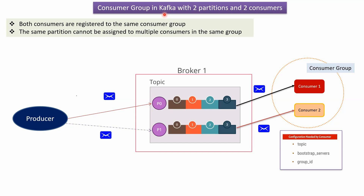In this video tutorial I will explain consumer groups in Kafka with two partitions and two consumers. Here you can see the broker. The broker has one topic and this topic has two partitions: partition 0 and partition 1.